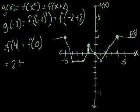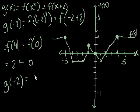And just as a reminder, this is the definition of f. We didn't define it in terms of an algebraic expression. We defined it in terms of an actual visual graph. So what's f of 0? f of 0 is 0. When x is equal to 0, f of 0 is 0. So it's 2 plus 0. So g of negative 2 is equal to 2.